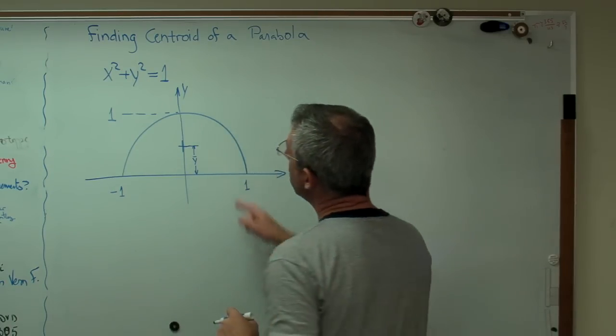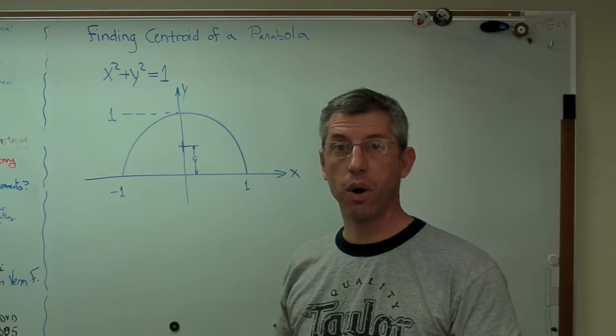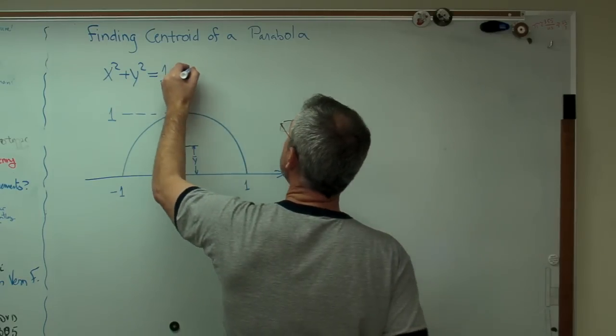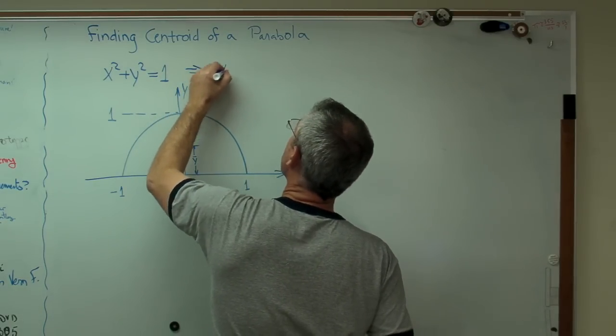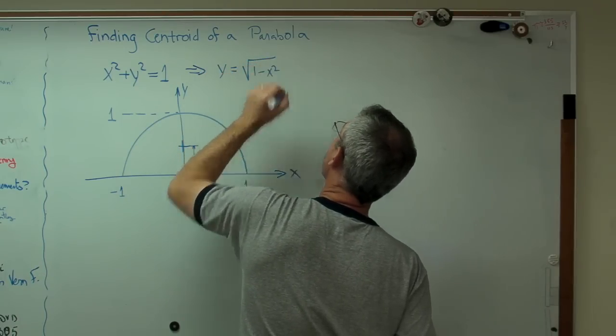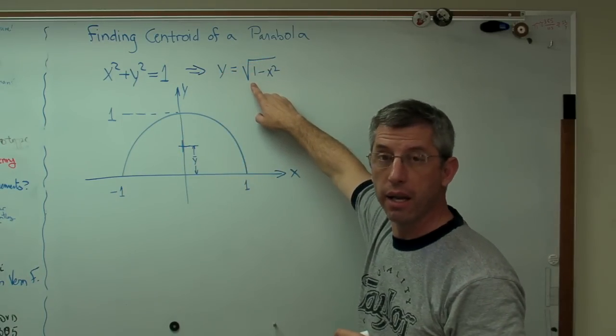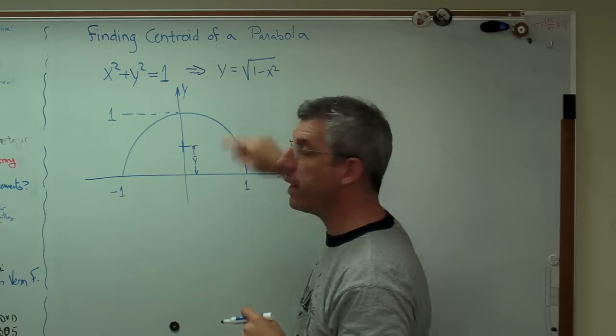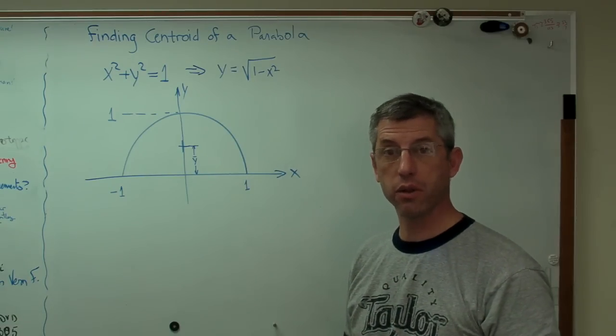Now, I'm going to need to know what this curve is here, y as a function of x. So let me do that real quick. y is the square root of 1 minus x squared. If I were to look at the positive and negative square roots, I'd get a circle. But for right now, I'm only interested in the positive square root.